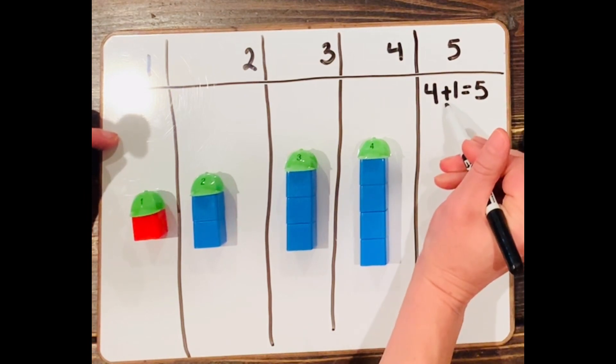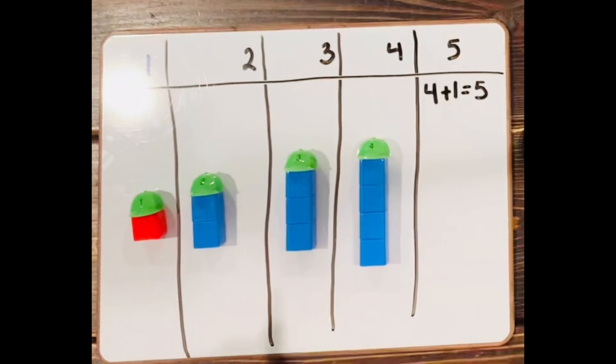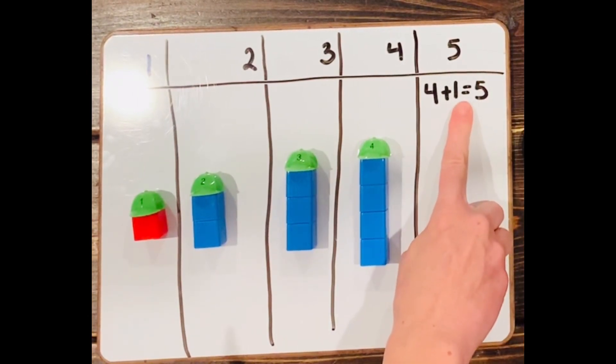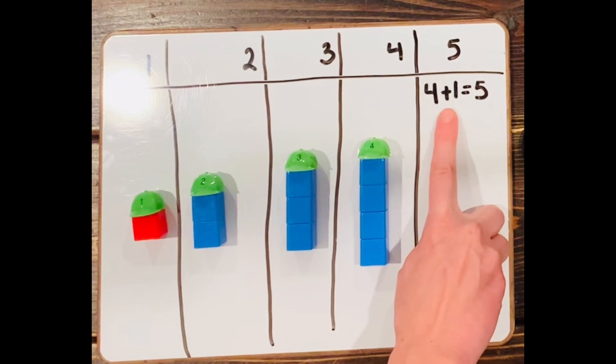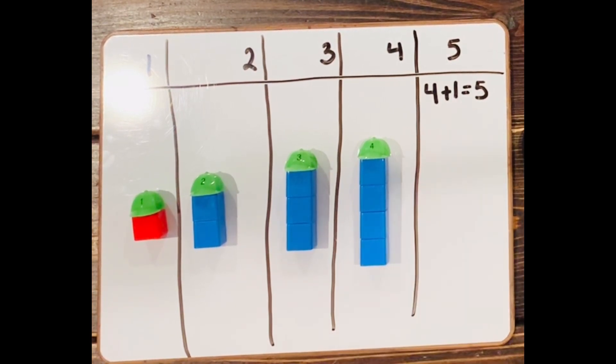So we have plus, the plus sign, that means more, more, more that we're adding. And equal means, the equal sign means what the answer is. How many all together do we have? And we use this after we do a number sentence like that. We use the equal sign to show how many.